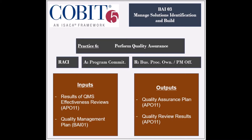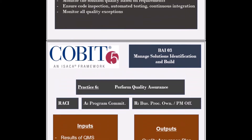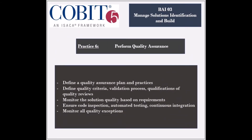It generates two outputs: the quality assurance plan and the quality review results, both to be used by the APO-11 process. The activities involved include defining a quality assurance plan and the required practices, such as the quality criteria, the validation process, and the roles and responsibilities. The solution's quality should be regularly monitored based on the project requirements and the acceptance criteria.